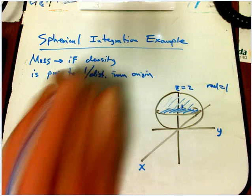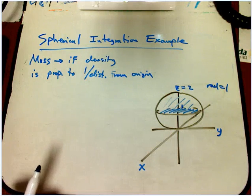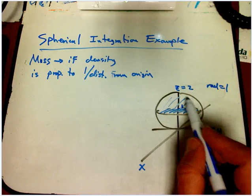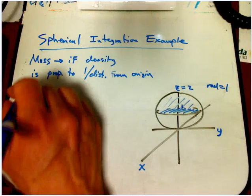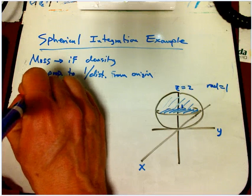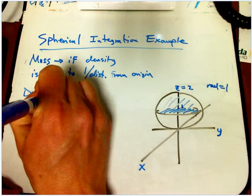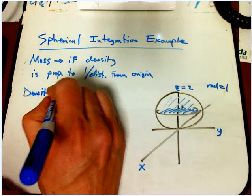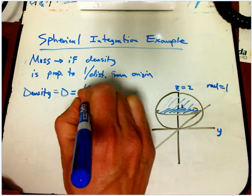So it's inversely proportional to the distance from the origin. So it's going to be densest here, not so dense here, not so dense here. So the density, unfortunately we use rho sometimes for density and for the spherical radial coordinates. So I'm just going to say density equals D is k over rho.